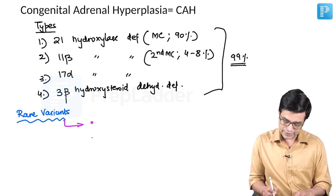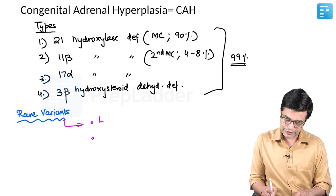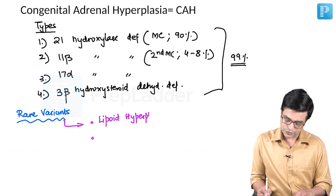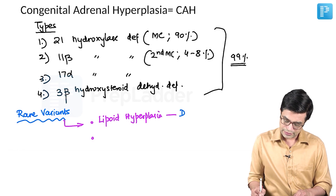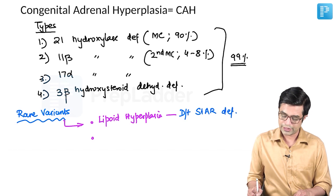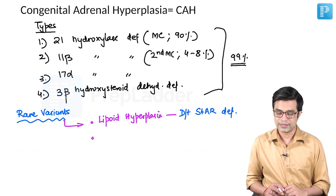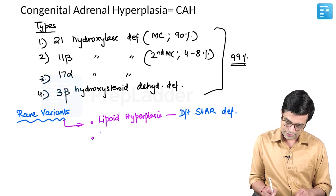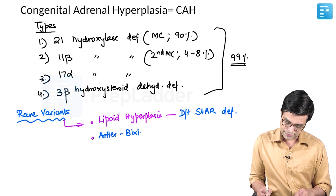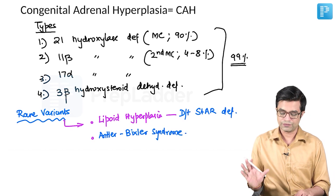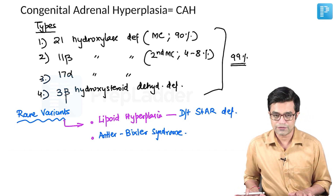Rare variants important for super-speciality exams include two entities: first, lipoid hyperplasia, which occurs due to STAR protein deficiency — the STAR protein catalyzes cholesterol movement and is the rate-limiting enzyme. Second is a syndrome called Antley-Bixler syndrome. More about this syndrome will be discussed at the end. These are the varieties of CAH.